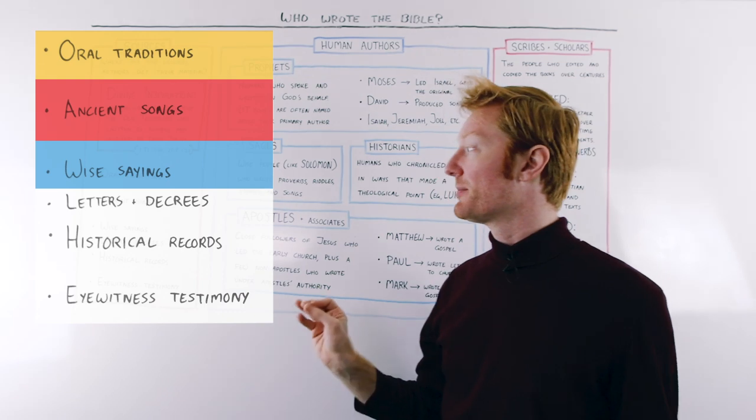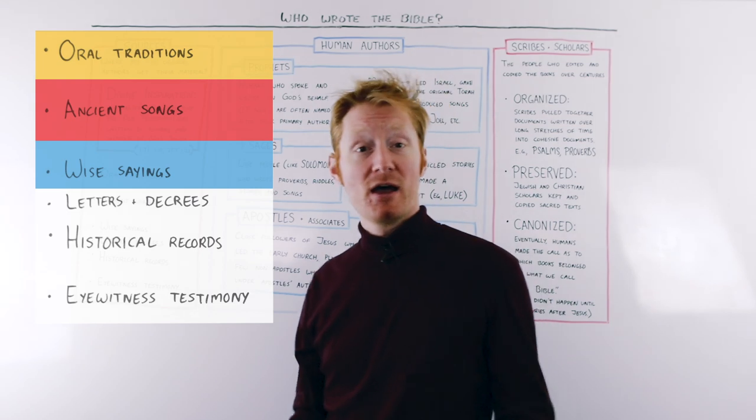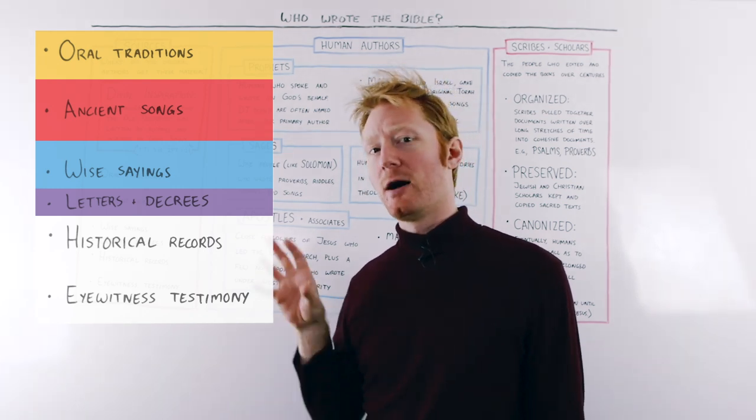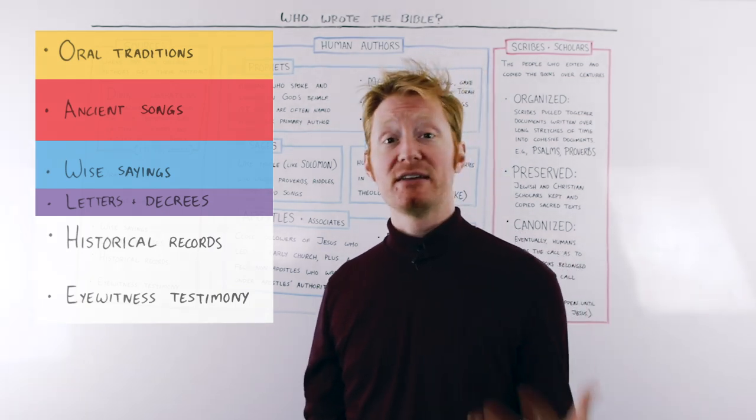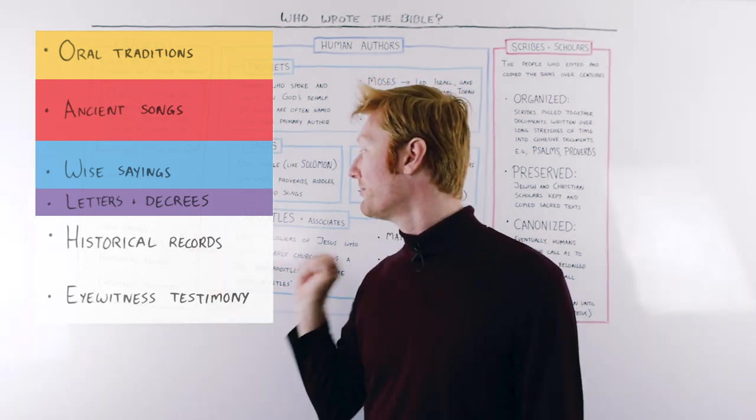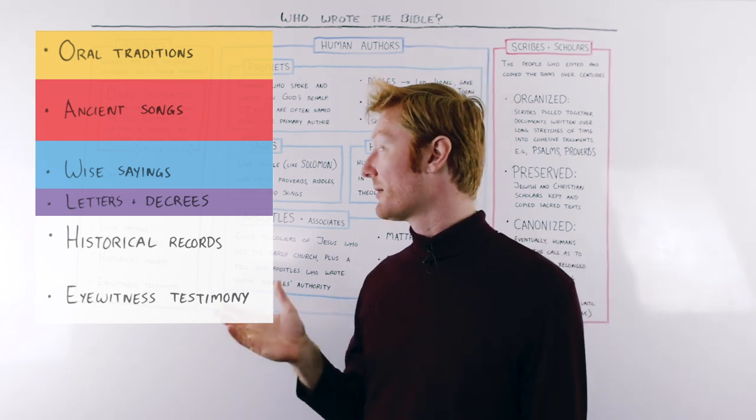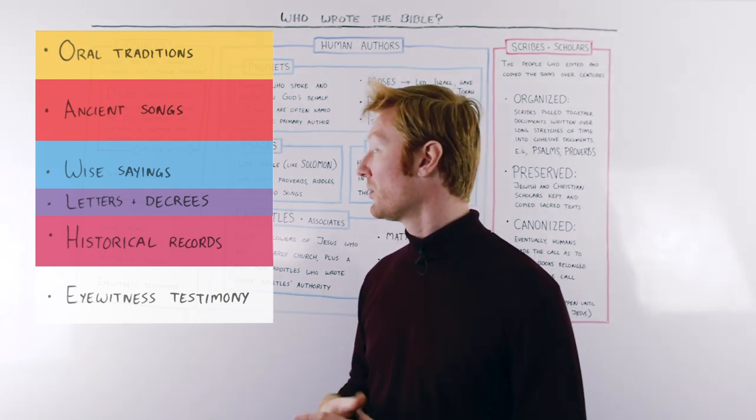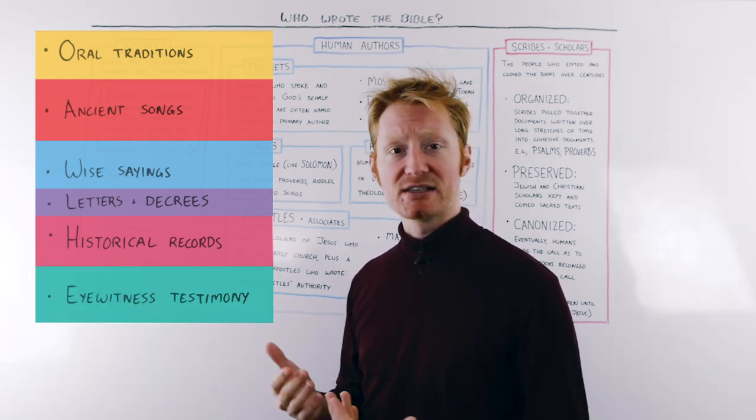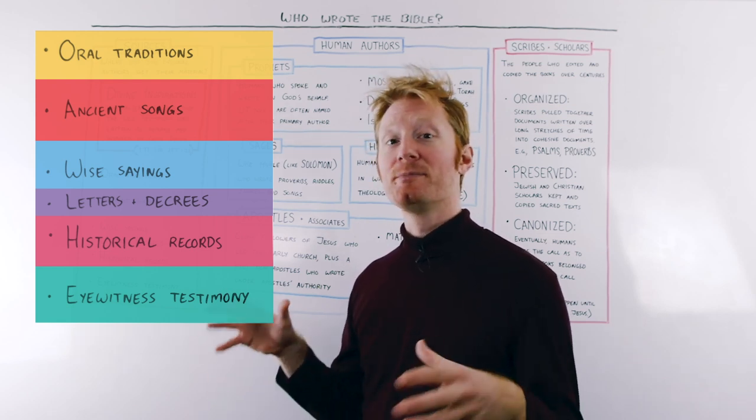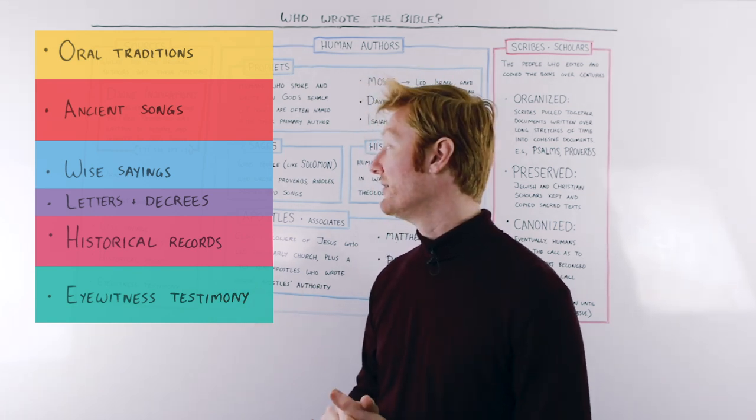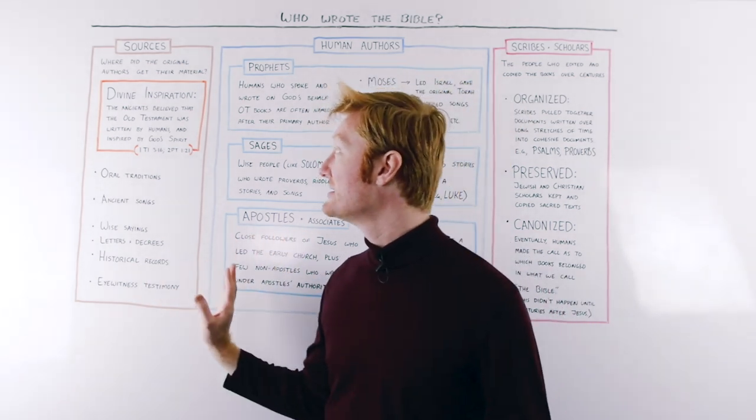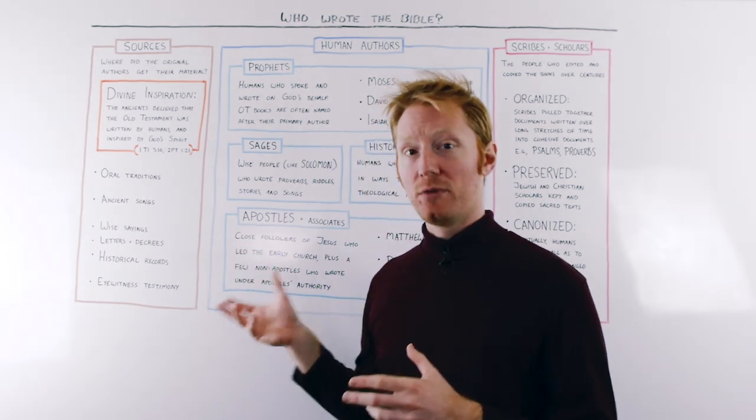We have wise sayings that are pulled in. Wise sayings from the Jewish leaders, wise sayings from other people that may not have been part of the Jewish faith. We have letters and decrees. You're going to find letters that were written from religious leaders to their followers. You're going to find decrees written by kings and emperors. These are pulled into the books that are in our Bible. We have historical records from kings and monarchs, or kings and monarchies of the ancient world. And we have eyewitness testimony. For example, in the Gospel of Luke, the author claims that he's pulled together these testimonies from other people that were present during the life and times of Jesus.